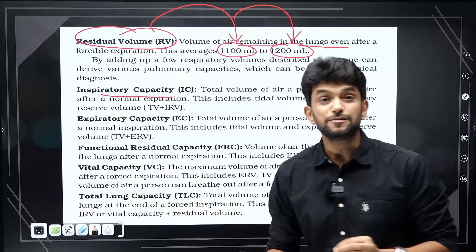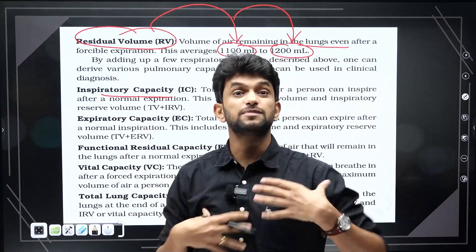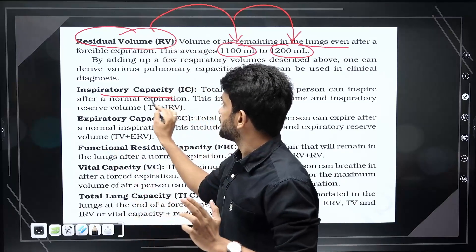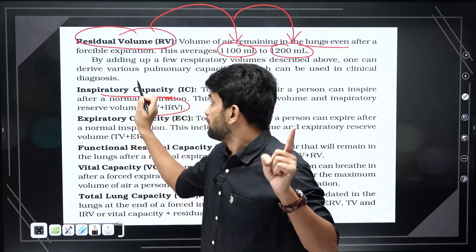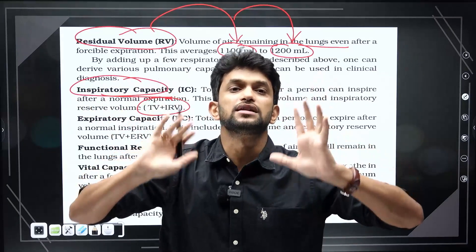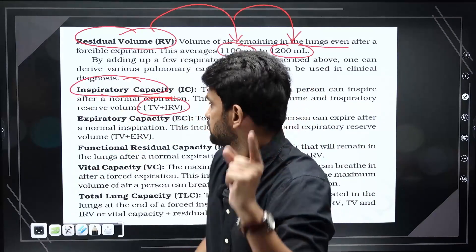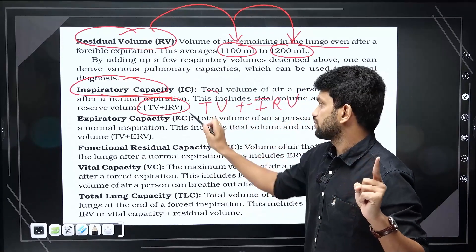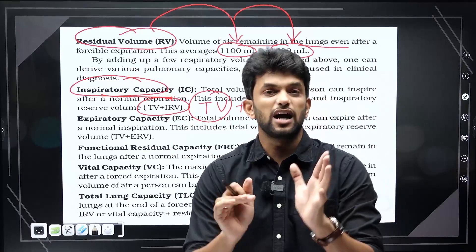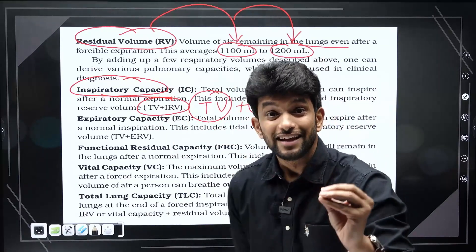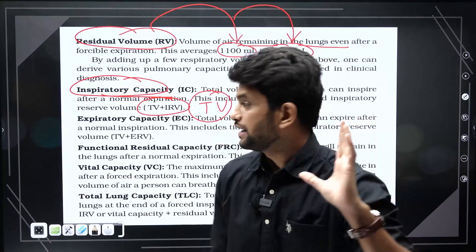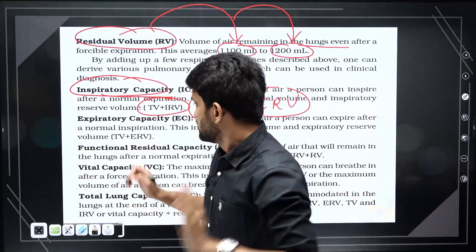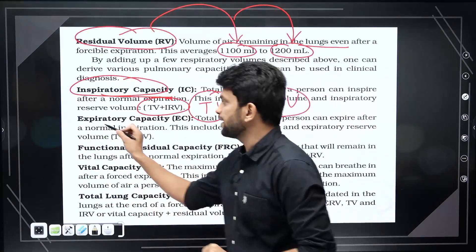Now we have the lung capacities. Inspiratory capacity is the total volume available to inspire — that is tidal volume plus inspiratory reserve volume. If you know the word meaning, you will know the formula. Inspiratory capacity equals tidal volume plus IRV.